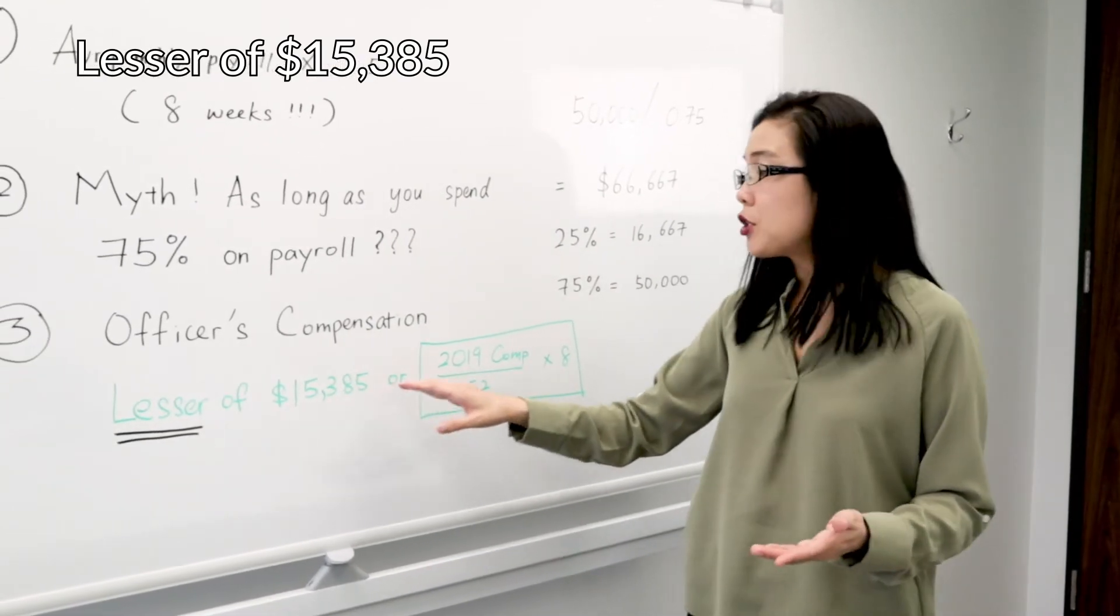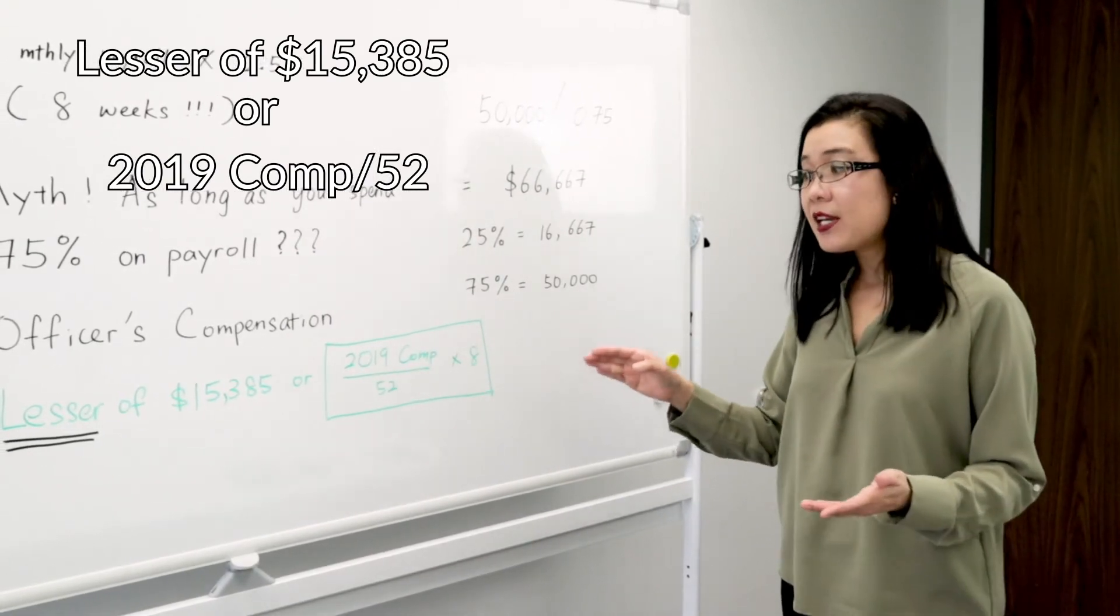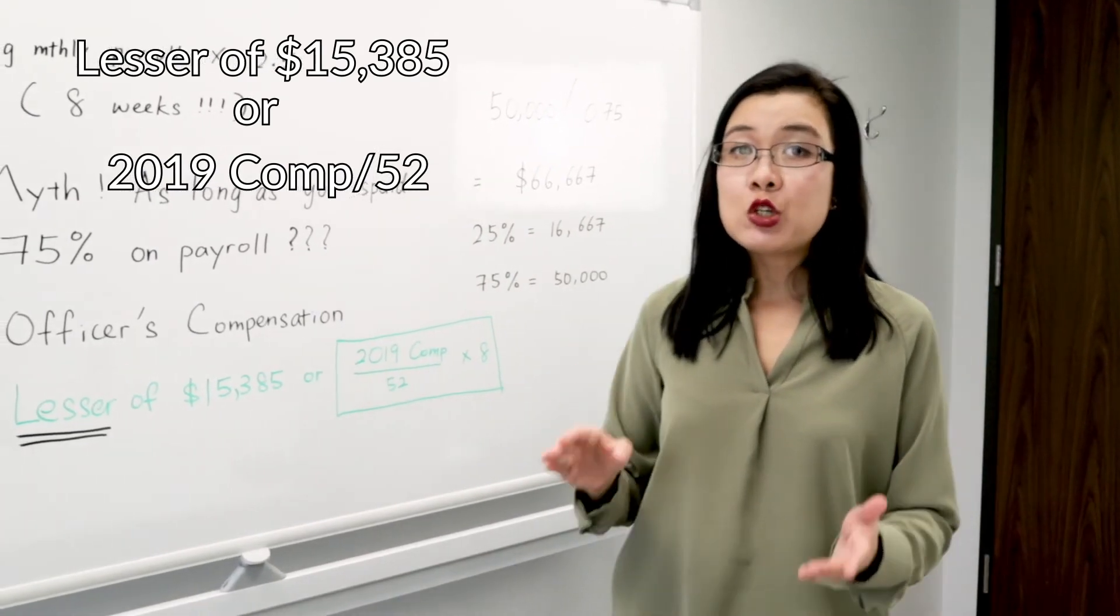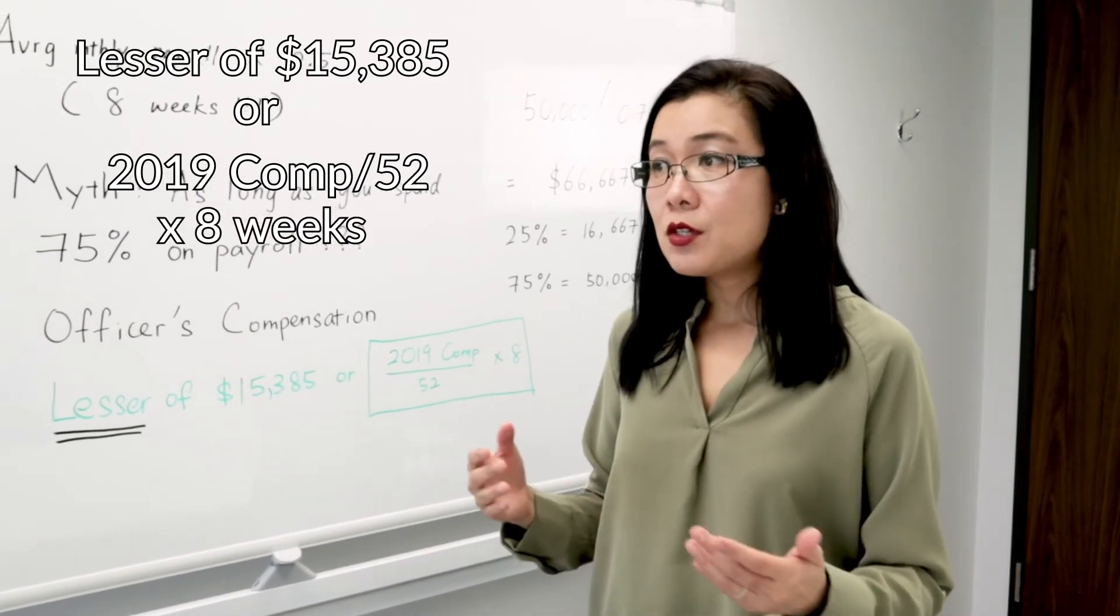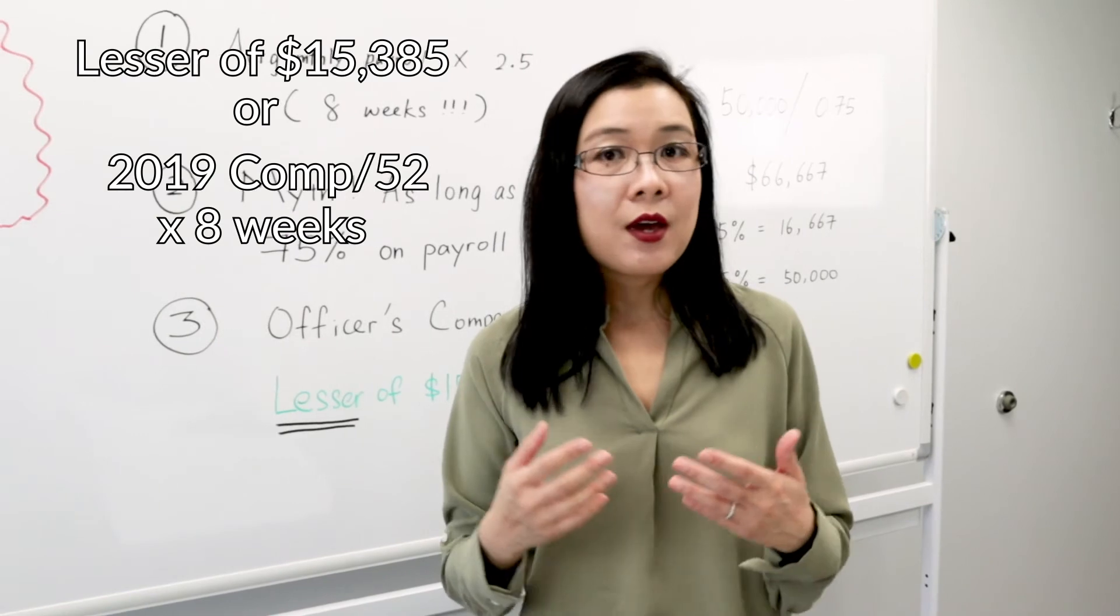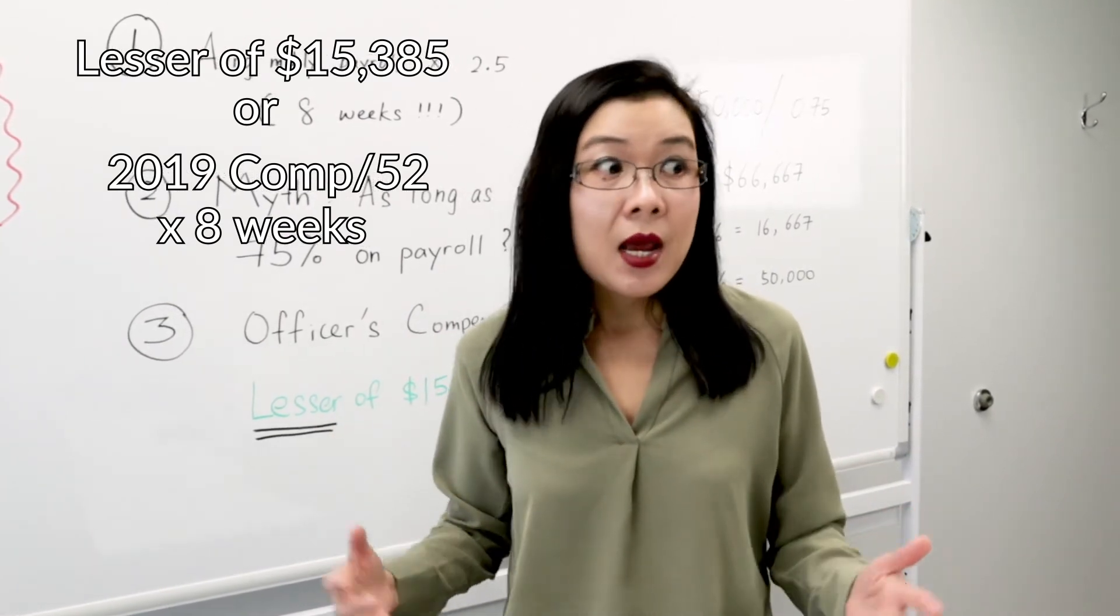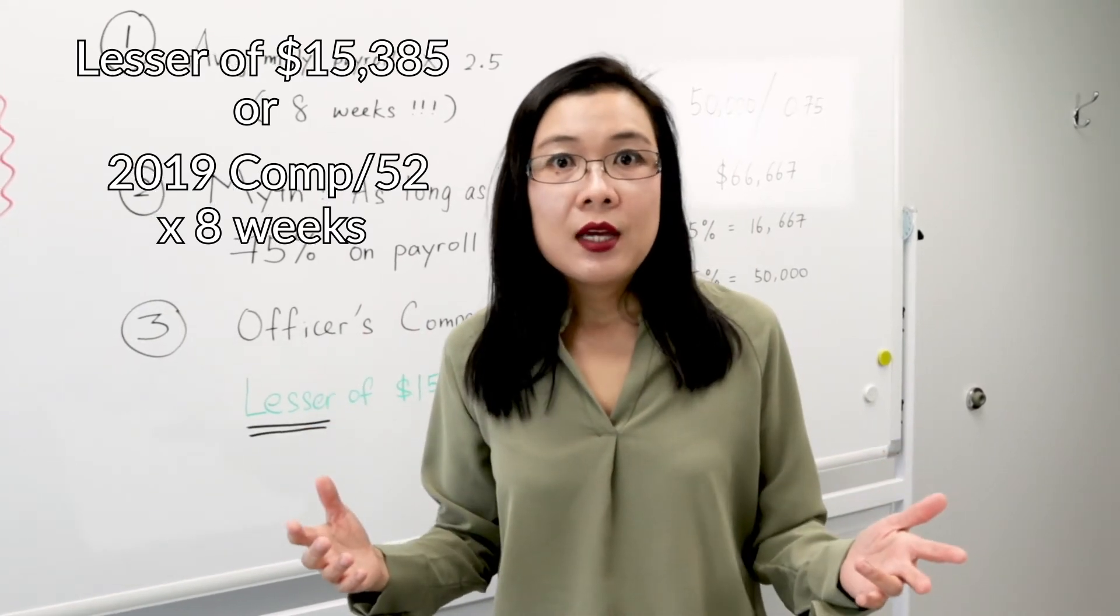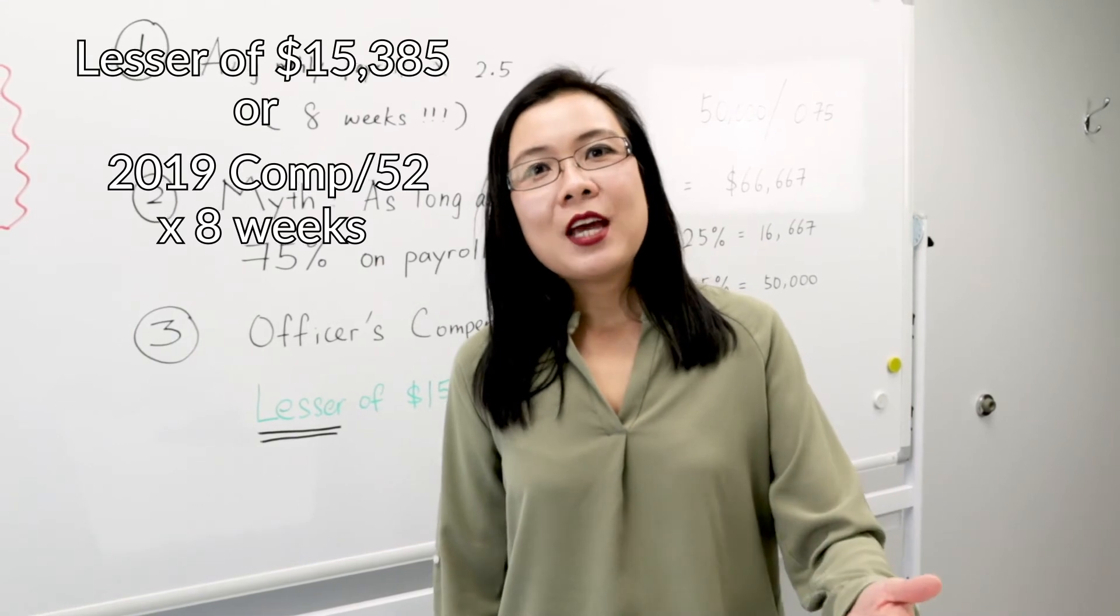$15,385 or 2019 compensation - so your 2019 compensation divided by 52 times 8 weeks. A lot of business owners went like, oh, what about if I have excess expenses? What if I don't make money in 2019? Doesn't that mean 100% of my loan that I receive in 2020 is not gonna be forgiven? Hopefully SBA will provide more guidance, but as of now, yes.